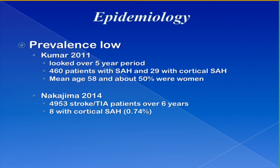Cortical subarachnoid hemorrhage is not the most frequent form of subarachnoid hemorrhage, and prevalence rates are generally very low — we are restricted to small case series to learn about this condition. A study by Kumar of Beth Israel in Boston looked at a five-year period with 460 patients with subarachnoid hemorrhage, and only a minority had cortical distribution. Similarly, a more recent study out of Japan with almost 5,000 patients over six years showed a very low percentage with cortical subarachnoid hemorrhage. But at a high-volume stroke center, you will see these patients with regularity throughout the year.